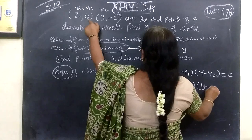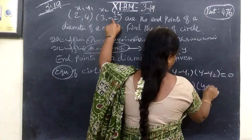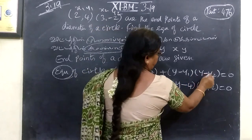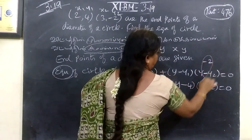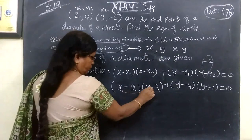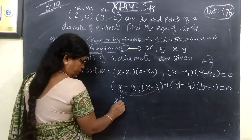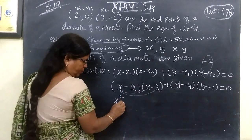So I will substitute. x minus x1, x minus x2, then y minus y1, then y minus y2. So (x-x1)(x-x2) then plus (y-y1)(y-y2).